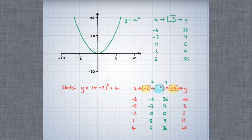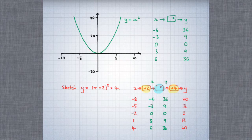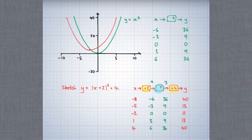So now we can draw the graph. On the original graph, the minimum point is at the origin. But after it's shifted 4 units up and 2 units to the left, the minimum point will move to here. And this is what the graph will look like. So we've been able to draw the graph of y equals the square of x plus 2 plus 4, by starting with y equals x squared and making two transformations.